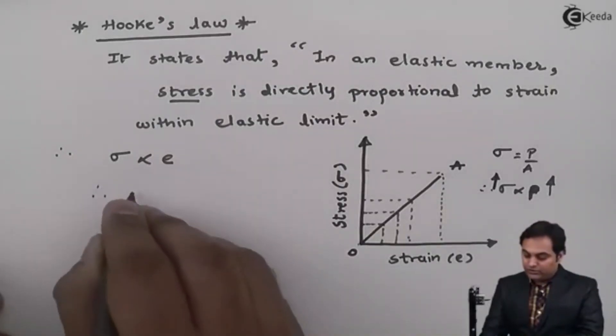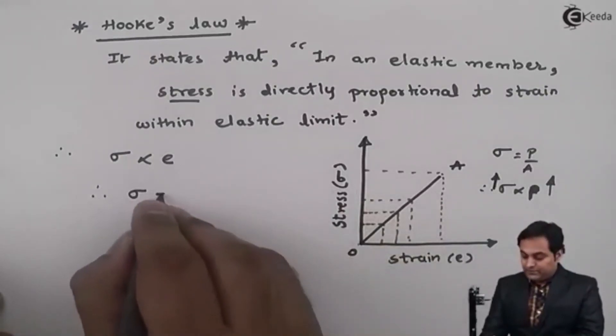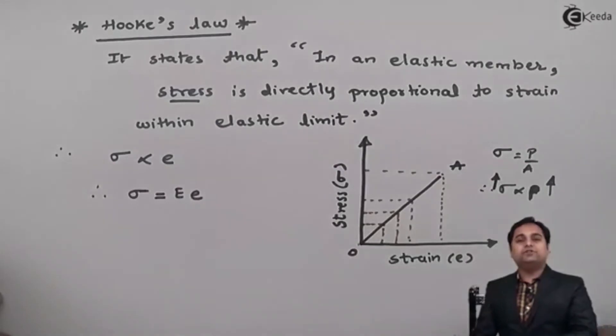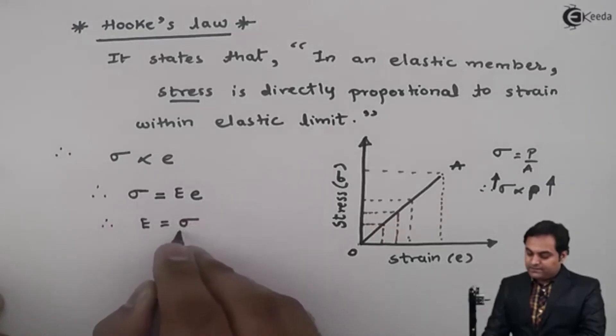Therefore, if I remove the proportionality sign, stress will be equal to a constant called as modulus of elasticity. So hence capital E, I will write it as stress upon strain.